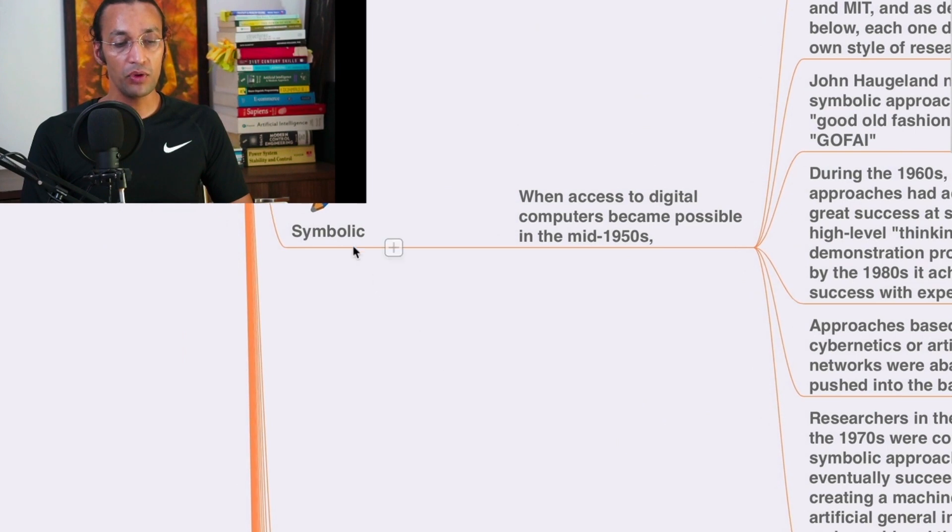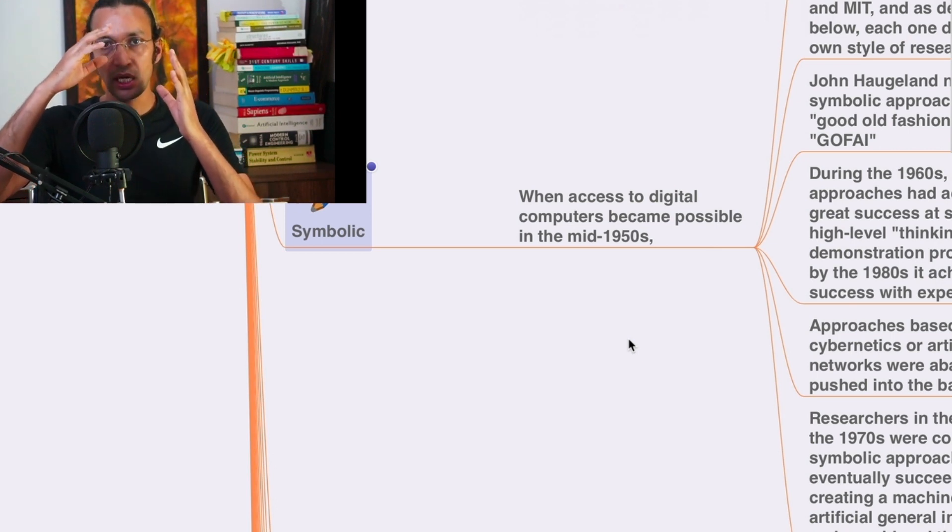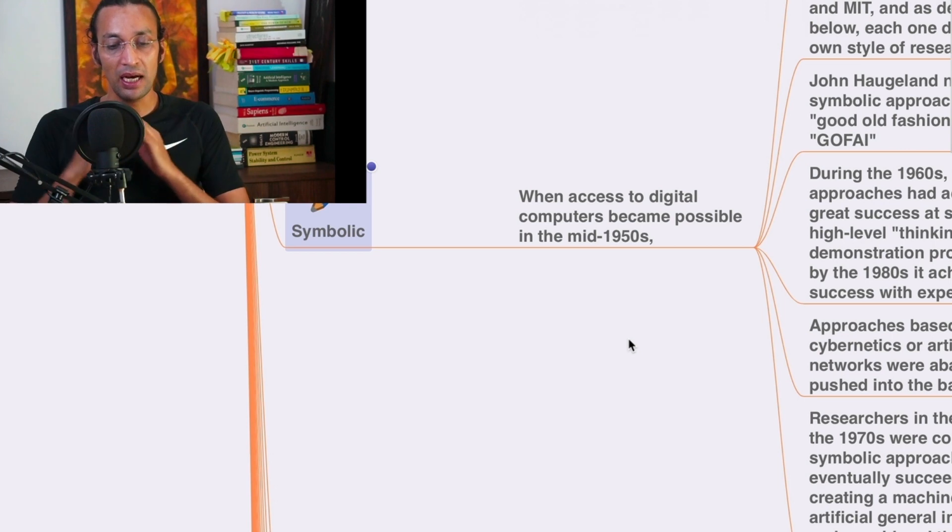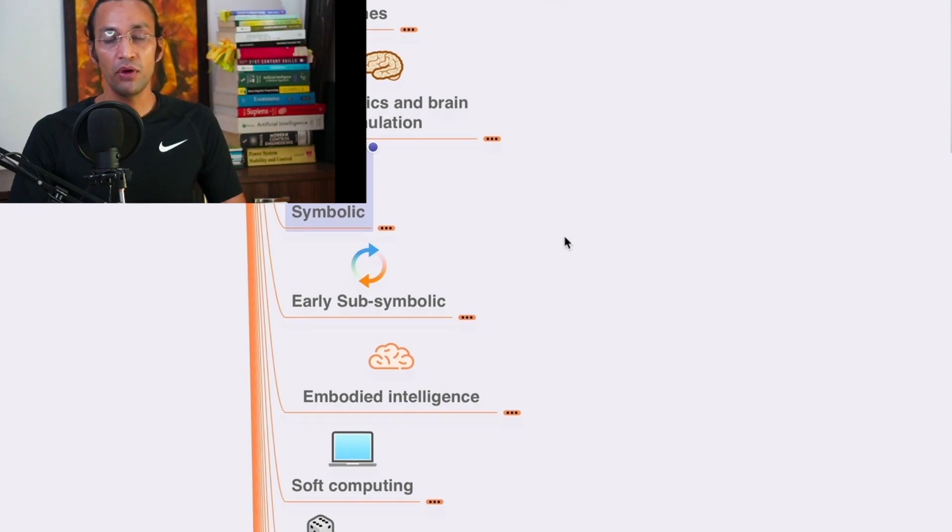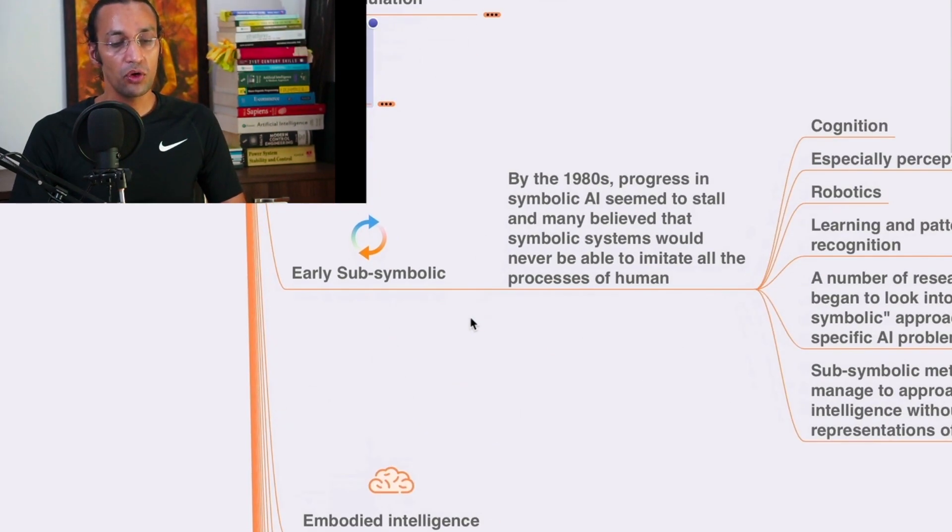So now we'll go into more of what was happening between 1950 till 1980s with AI through the evolution which was going on. And now we'll go to early sub-symbolic time for AI.